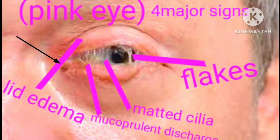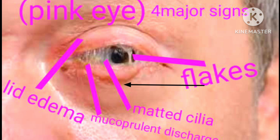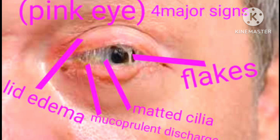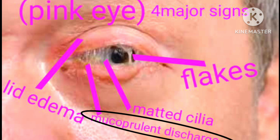We have lid edema, which means swelling of the lid. Mucopurulent discharge, described as a thick creamy discharge which causes the eyelashes to stick together. And we have matted cilia, meaning the eyelashes stick together. And flecks, which are seen in advanced cases where a thin layer of lid skin extends downward. Among all these signs, the main sign identifying bacterial conjunctivitis is the mucopurulent discharge.